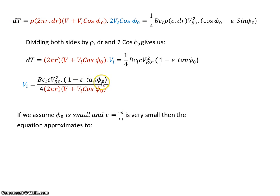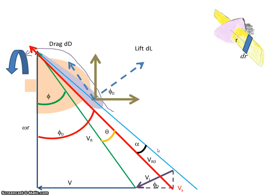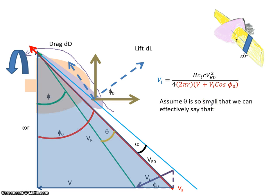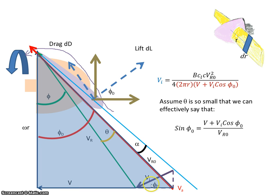At this stage, if theta is very small, the tan of that small angle is a small number. Also, if the blade has a good lift-to-drag ratio so that Cl is much greater than Cd, then the drag term becomes insignificant and can be dropped. So the induced velocity vi approximates to that simplified expression. Going back to our diagram, looking at the angle phi0, the sine of phi0 equals the opposite over hypotenuse, which is v plus vi·cosine phi0 over vr0.